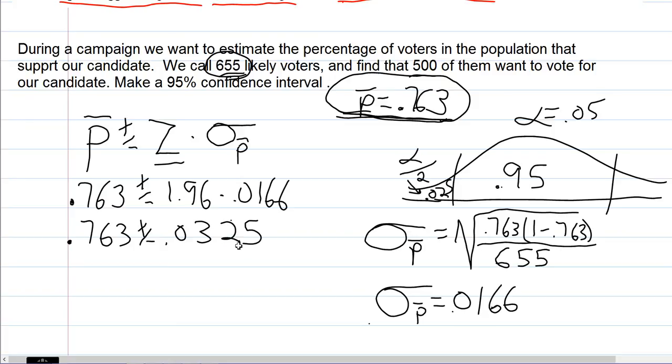We are 95 percent sure that the true proportion of people when they go to vote, how many will vote for our candidate, is somewhere in this range: 76.3 plus or minus 3.25 percent. Sometimes people leave the answer that way, or they'll say we did a poll today of 655 likely voters and found that 76.3 percent of people are going to vote for our candidate with a margin of error of 3.25 percent. Or sometimes we'll just add and subtract that number from the 0.763.